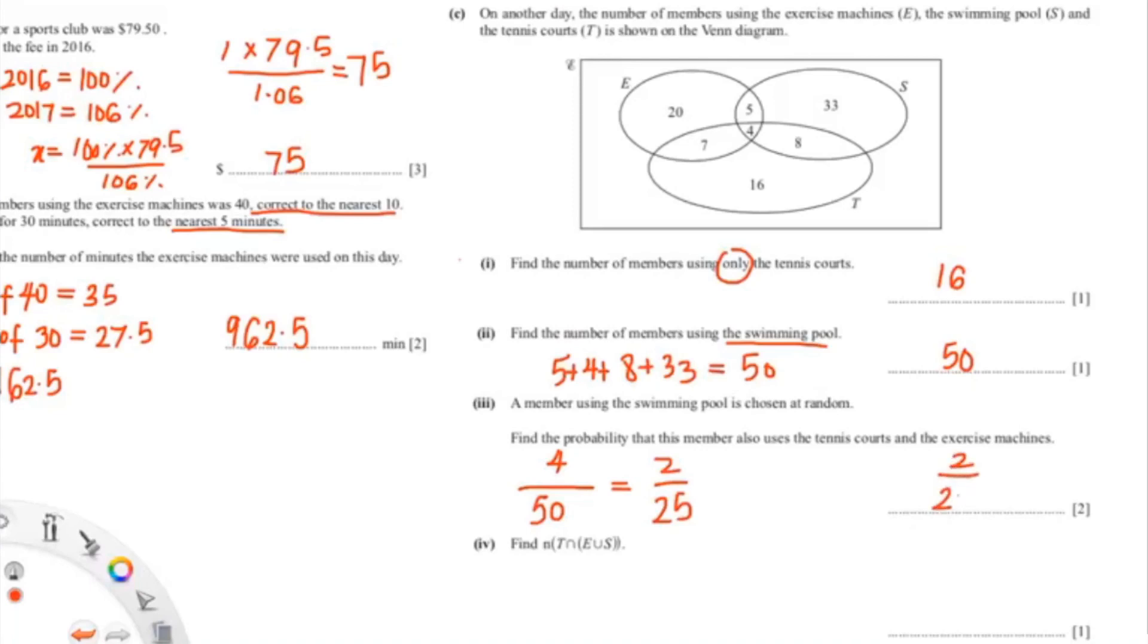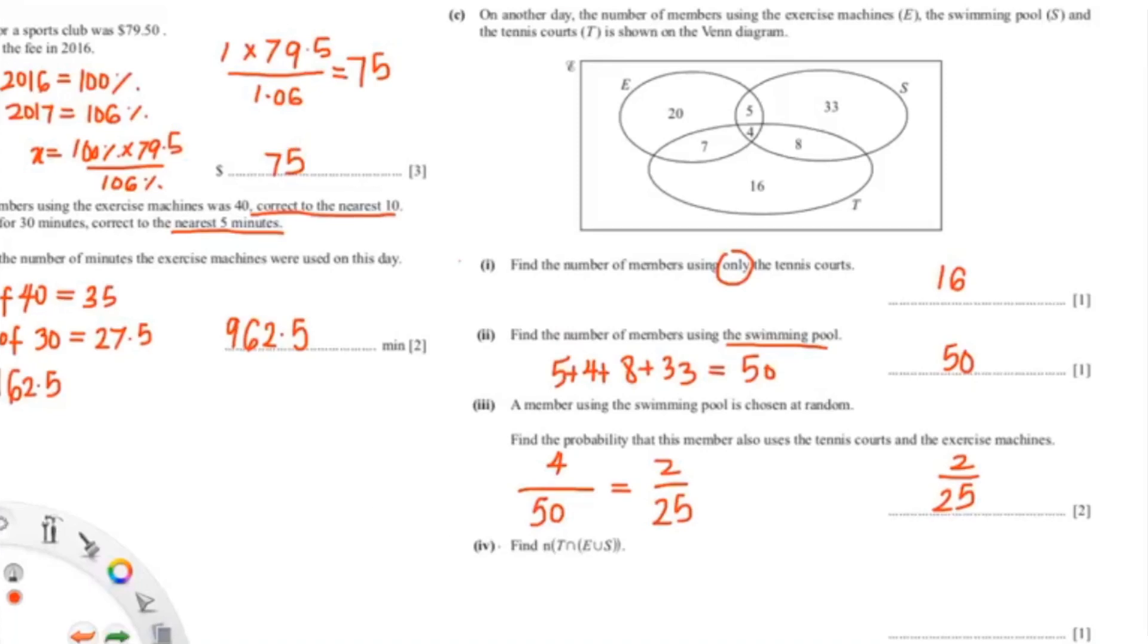So our answer would be 2 over 25. Moving on to the next question, they're asking to find the number of people using the tennis court where the tennis court intersects the union of the exercise machine and the swimming pool. As you can see, it intersects right over here.